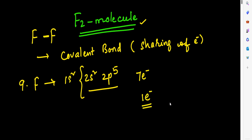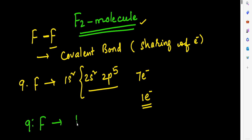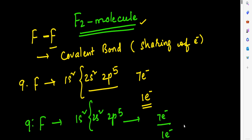In the same way, the second fluorine atom also contains seven electrons in its valence shell and requires one more electron to get the octet configuration. So take another fluorine atom — it also has the configuration 1s2 2s2 2p5, containing seven electrons, and requires one more electron.